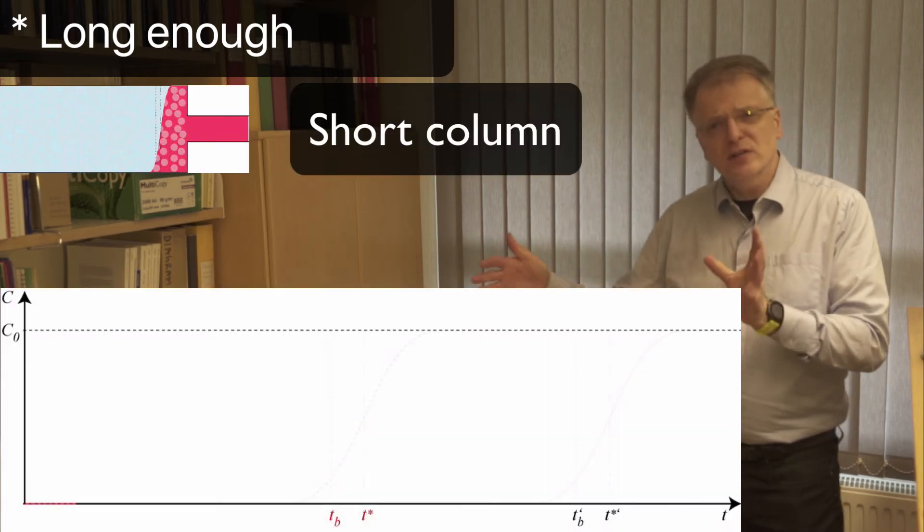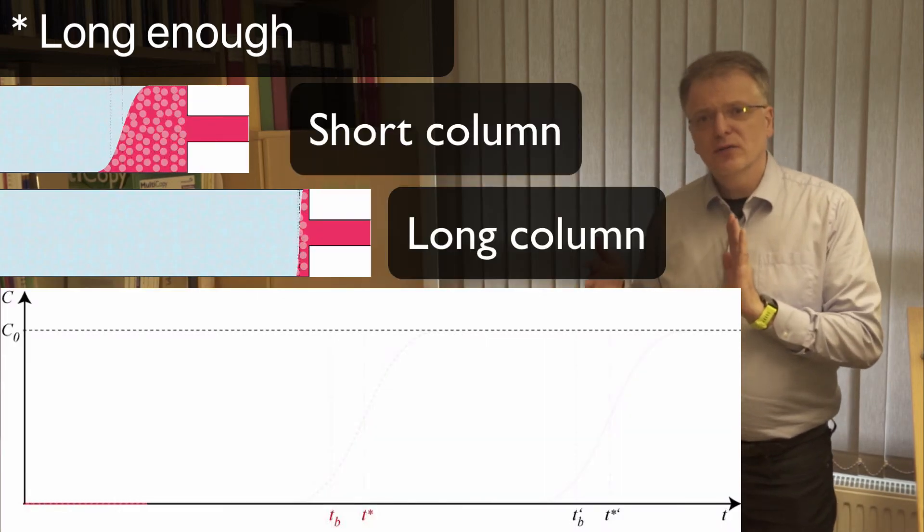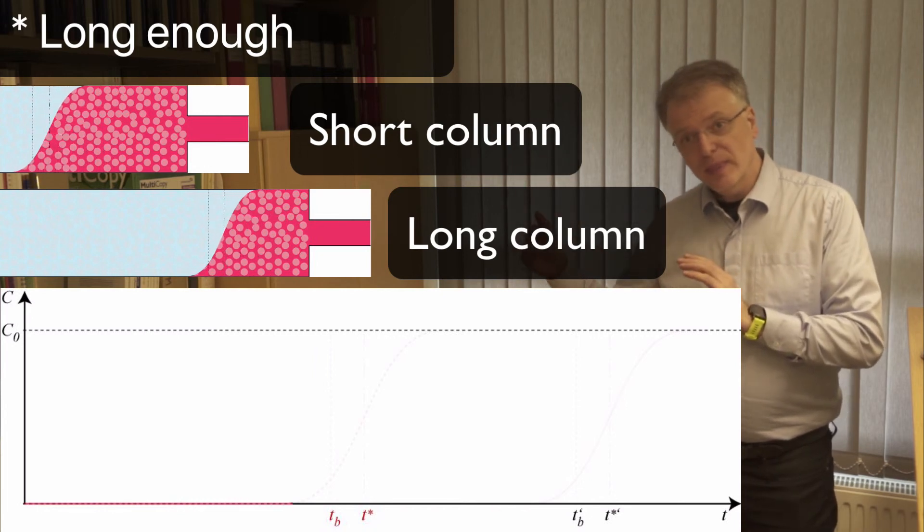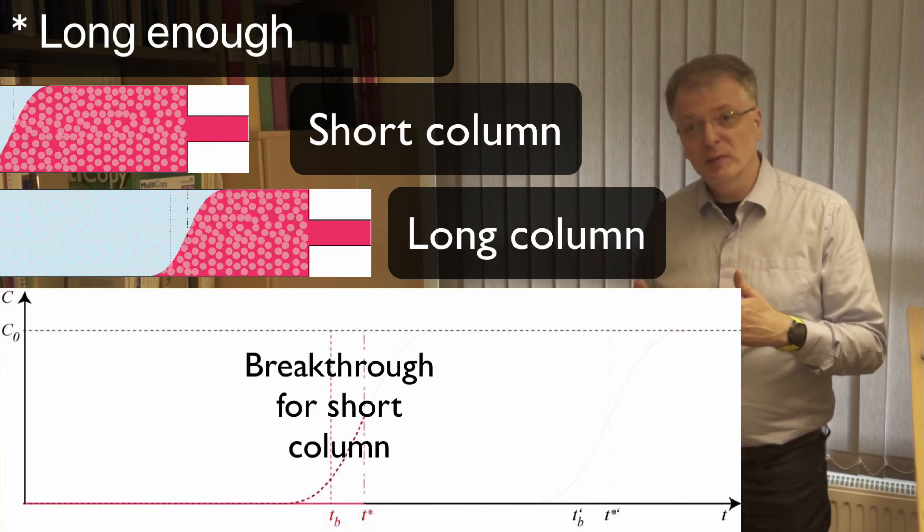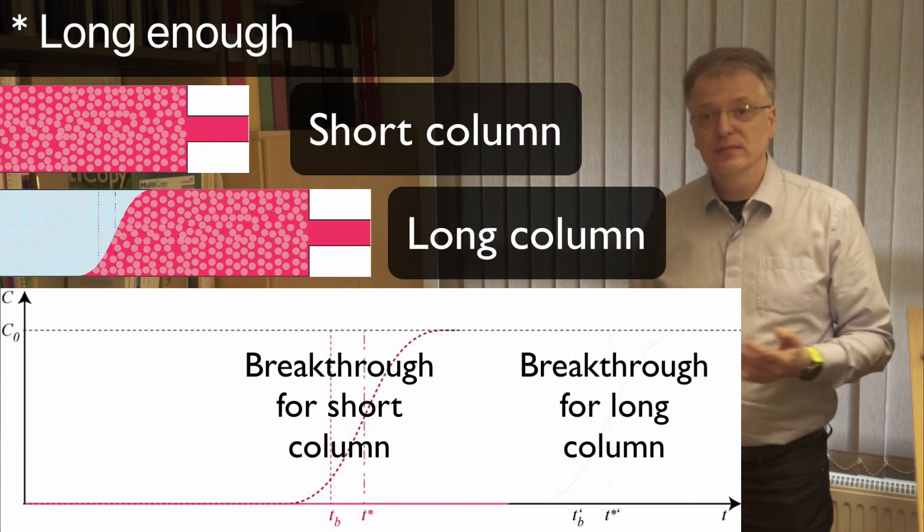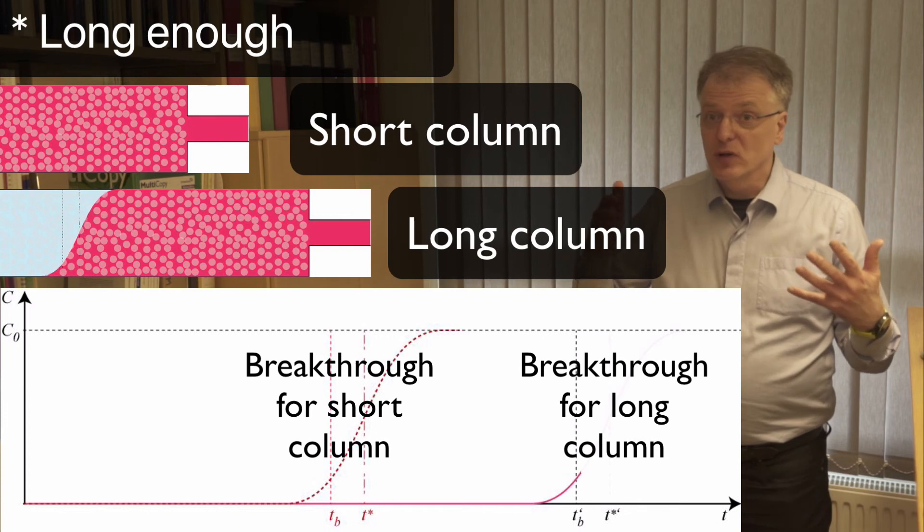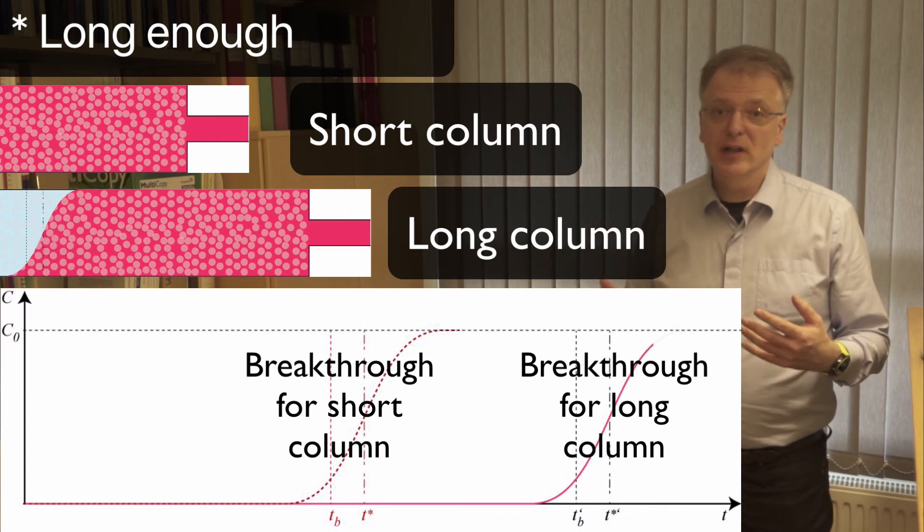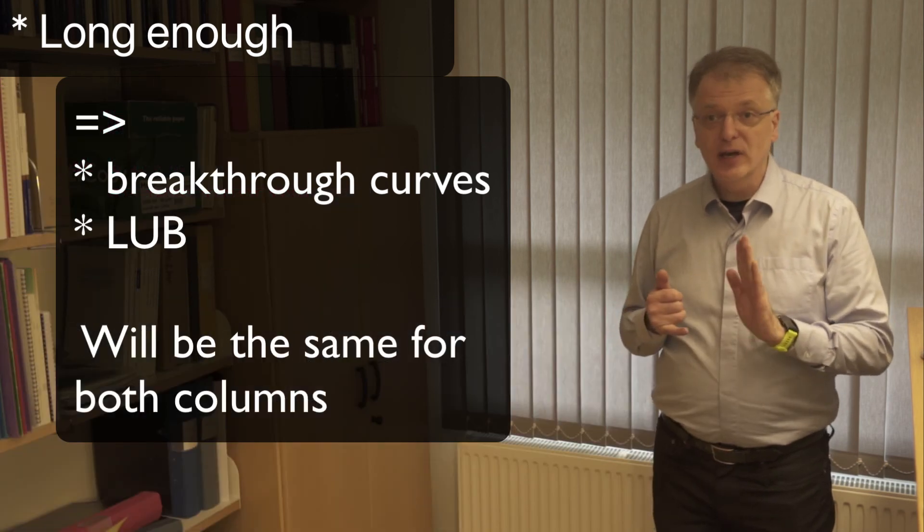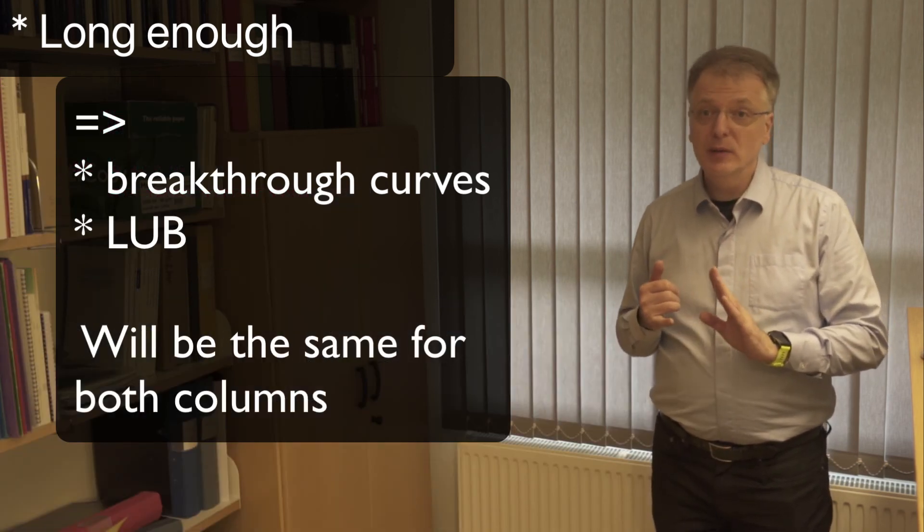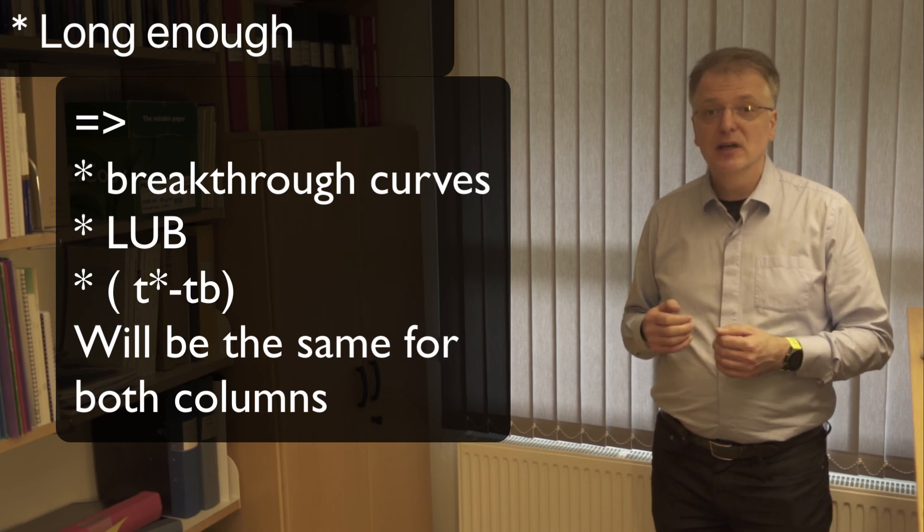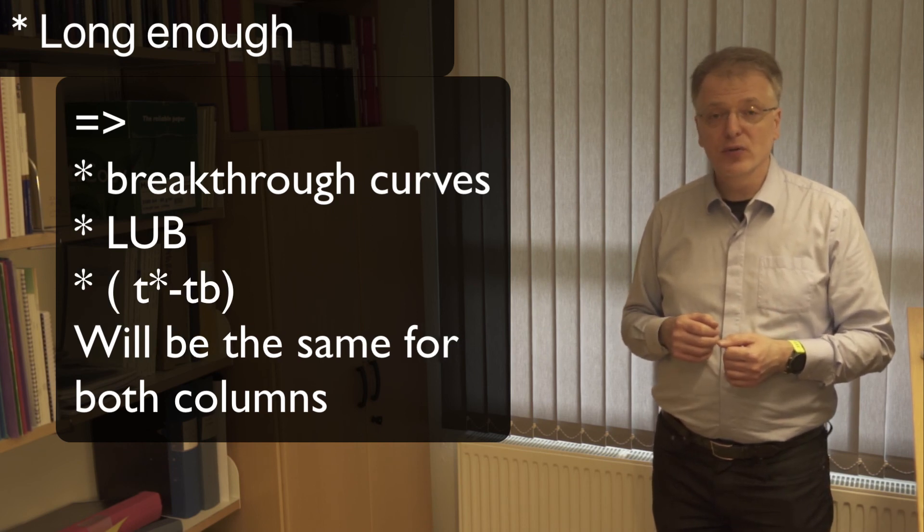Because if the small column is too short for constant pattern to develop, the breakthrough curve in the small column will be steeper than the breakthrough curve in the larger, longer column. But if the small column is long enough for constant pattern to develop, the breakthrough curves for two columns will look the same, the length of the unused bed will be the same, and the time difference between T-star and TB will also be the same for both columns.